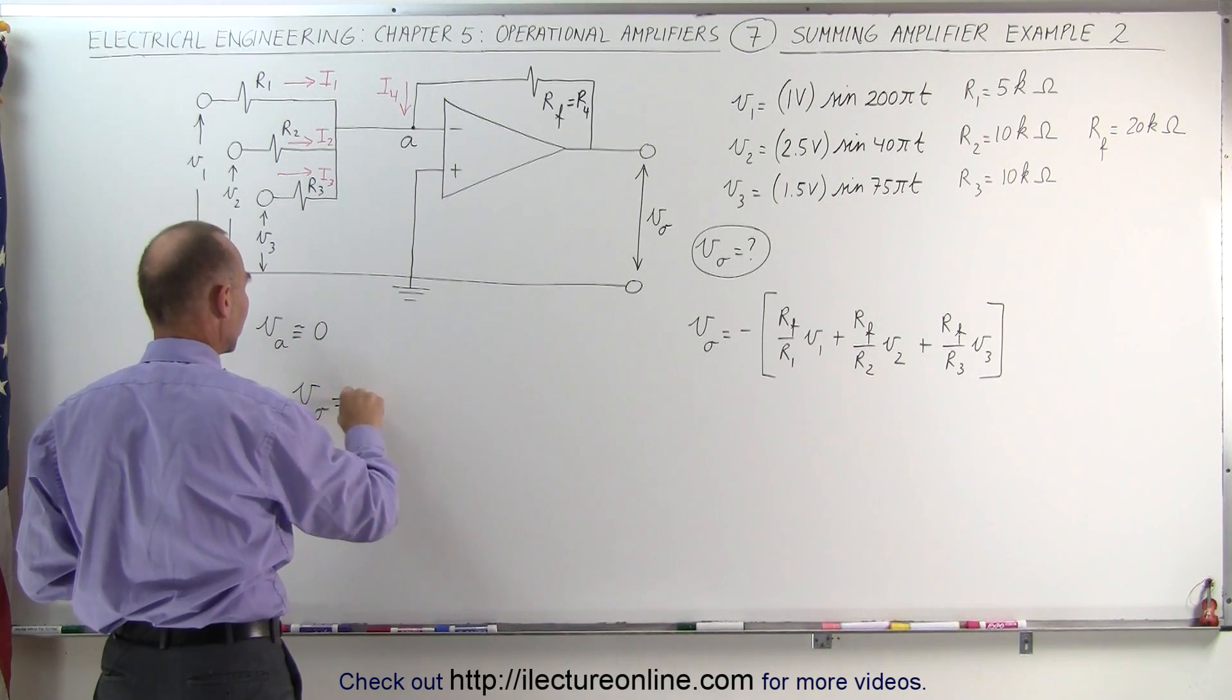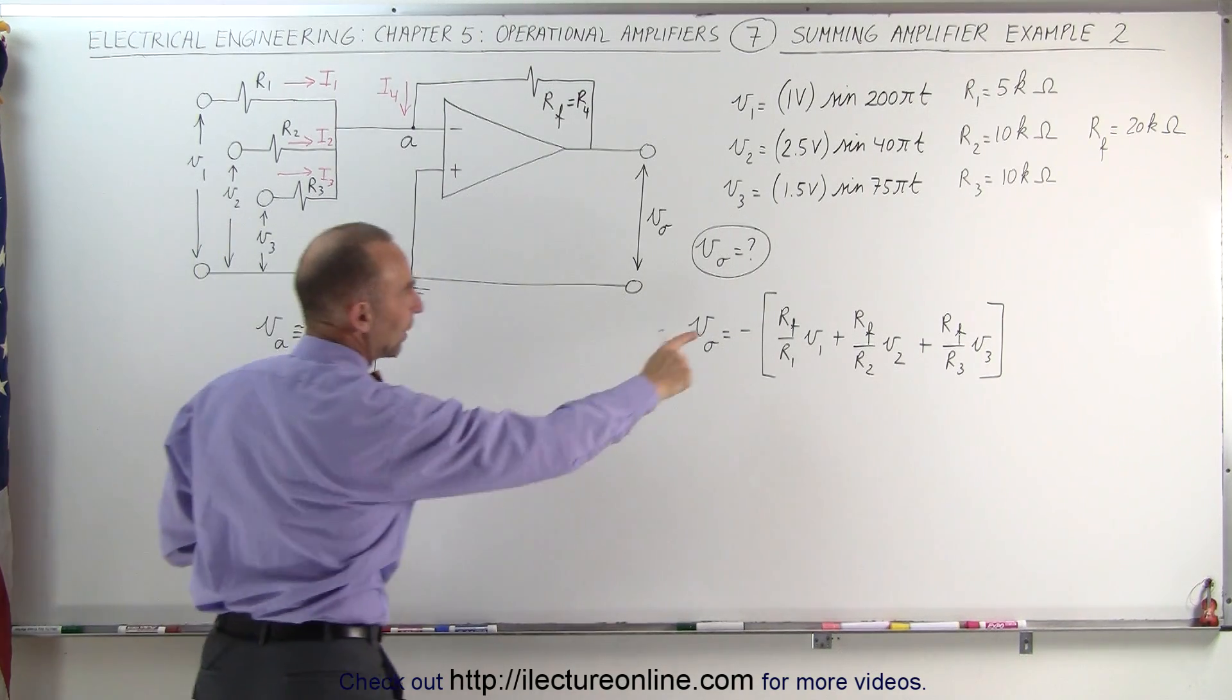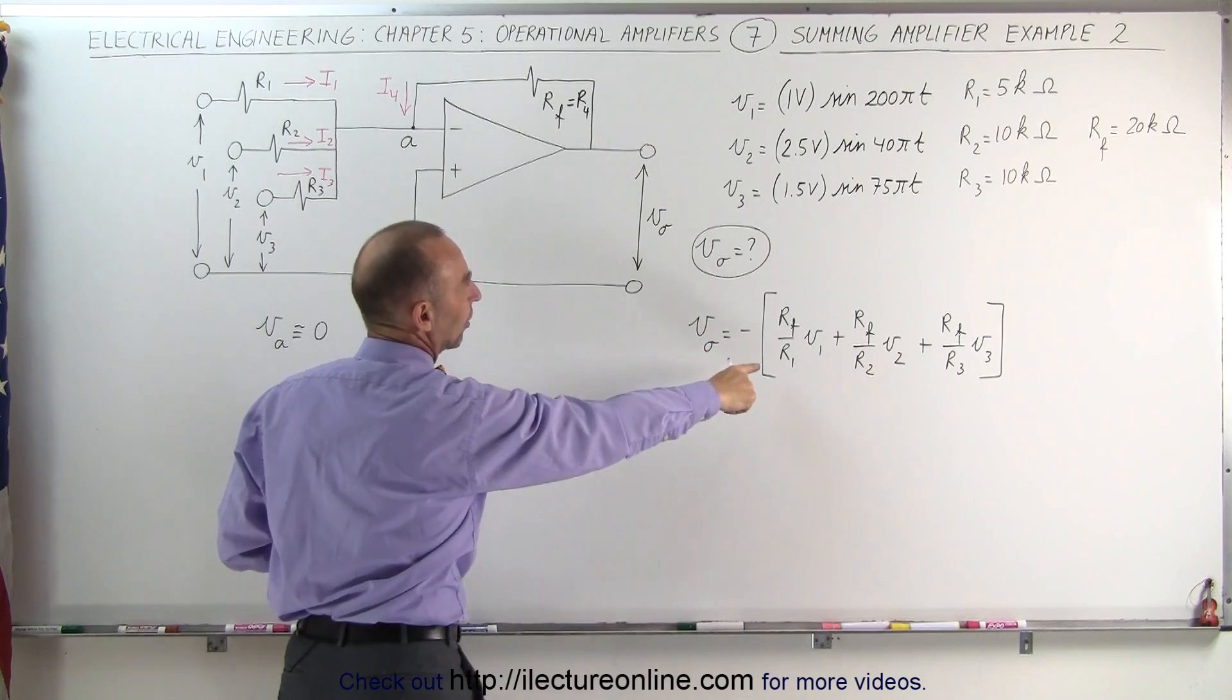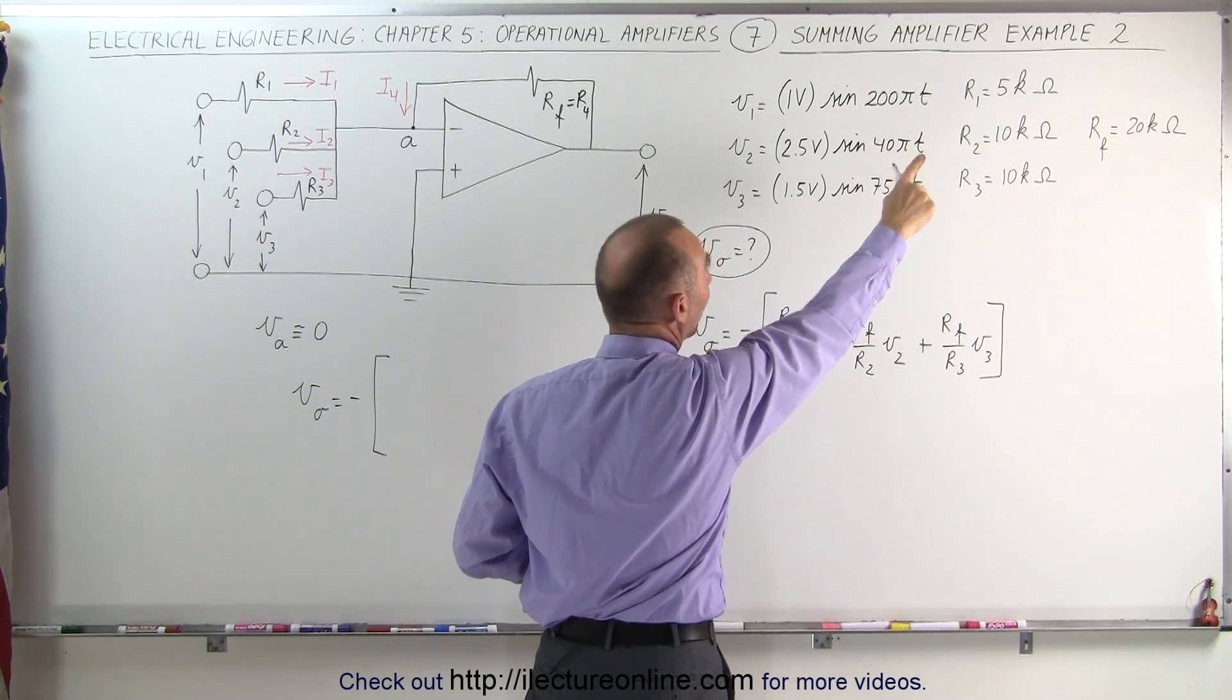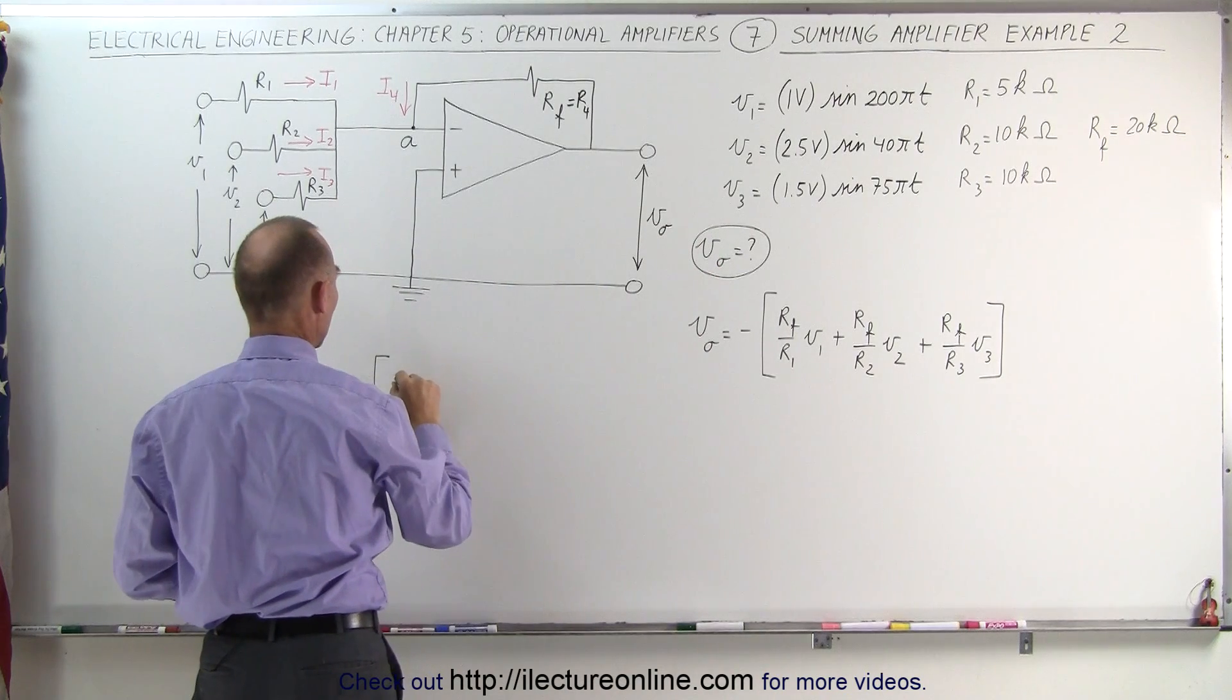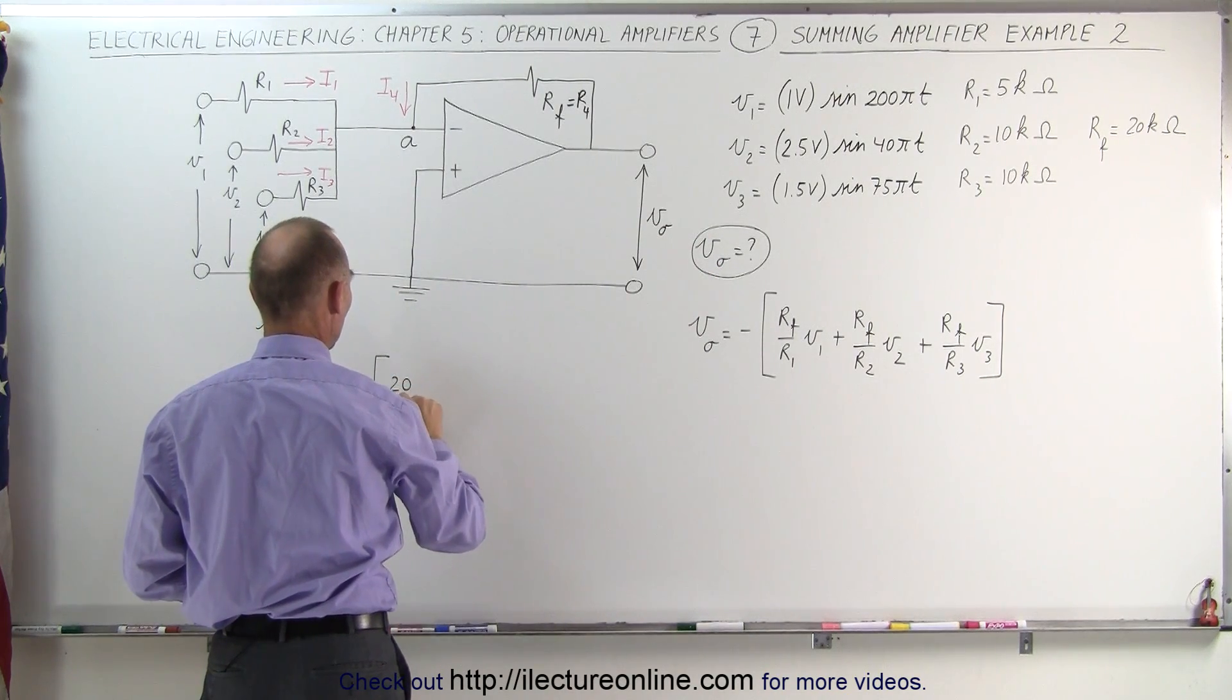We have the output voltage is equal to the negative of, so we have the ratio of Rf to R sub 1. Rf is 20 kilo ohms and R sub 1 would be 5 kilo ohms, so it would be a ratio of 20 to 5.